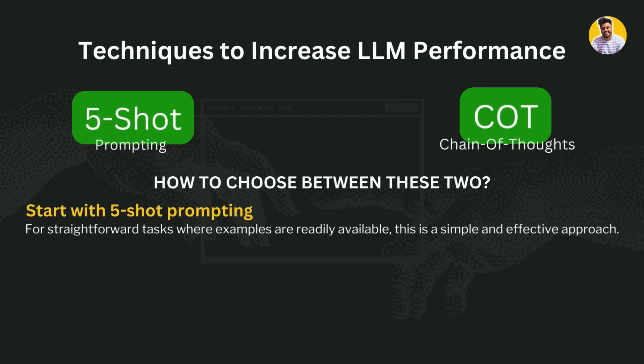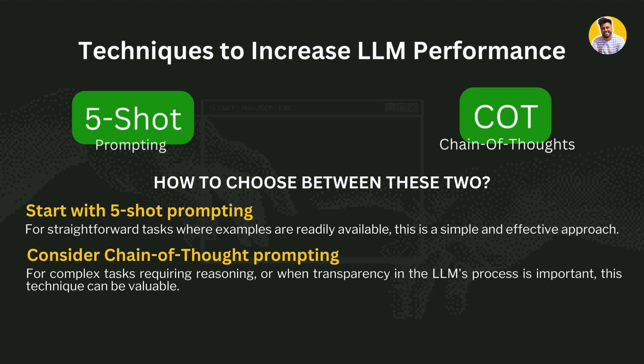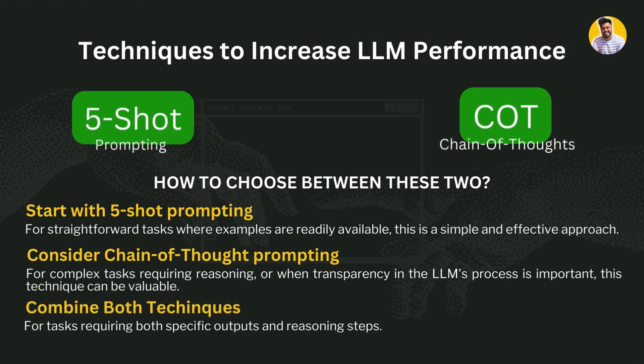If we start with 5-shot prompting, for straightforward tasks where examples are already available, this is the best technique to use. But if you consider chain of thought prompting, it is required only for complex tasks that need reasoning and transparency in the large language model's process. You can also combine both 5-shot prompting and chain of thought prompting for tasks that require both specific outputs and reasoning steps.